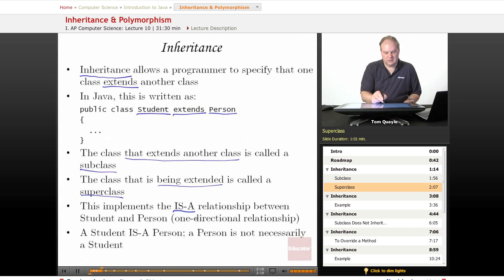This implements what's known as the IS-A relationship between student and person. We say that student is a person. Student has all the attributes and capabilities that a person does plus more. It is a one directional relationship. So a student is a person, but a person is not necessarily a student. A person may be a person without being a student. They may be something else. So it is definitely a one directional relationship where the subclass student inherits attributes and functionality from person, but the relationship does not go the other way. Person does not get anything from student.